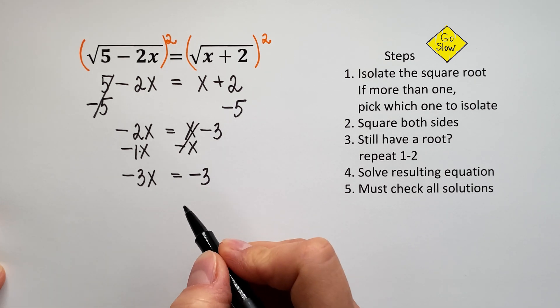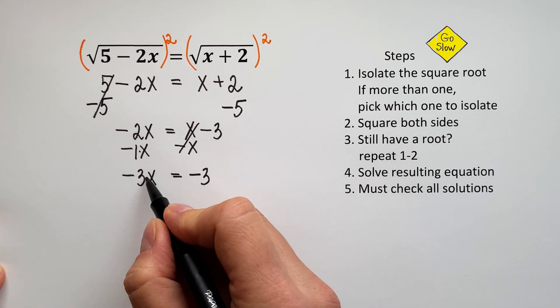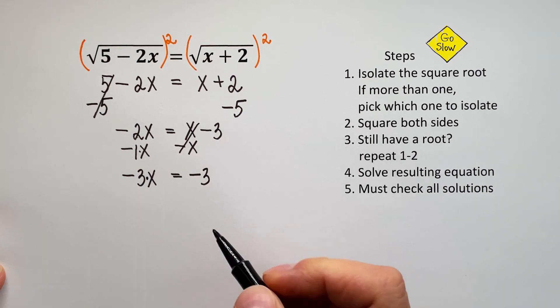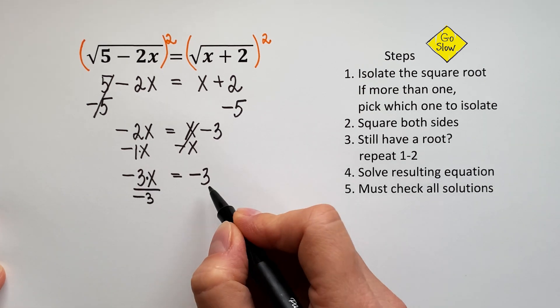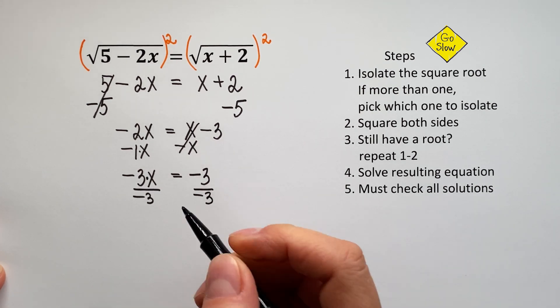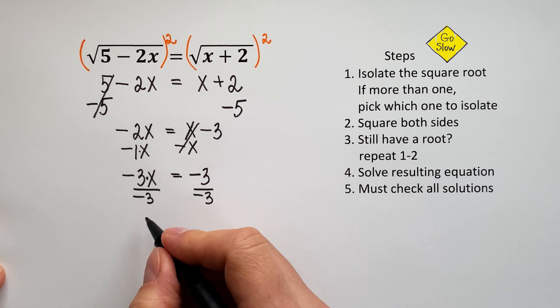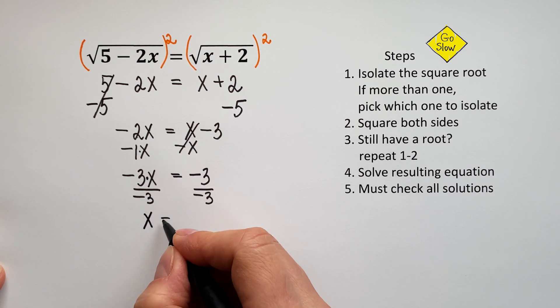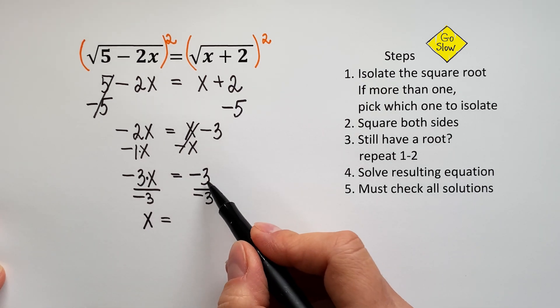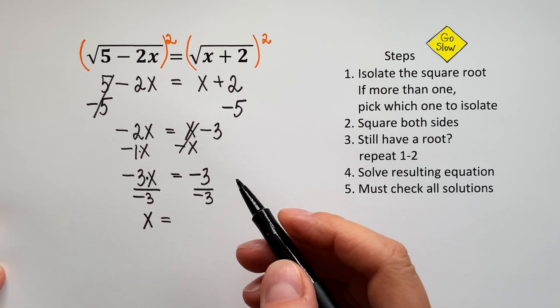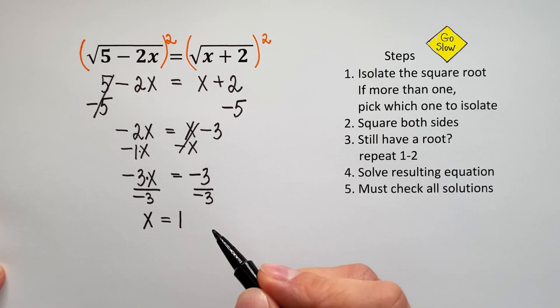All right, the next step, we are dividing both sides by negative 3 in order to separate negative 3 from X. So dividing both sides by negative 3, and we will have negative 3X divided by negative 3 will be positive 1X, or just X. And on the right, negative 3 divided by negative 3 will be positive 1. Very good!